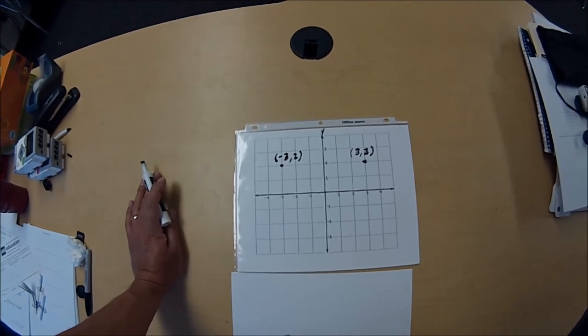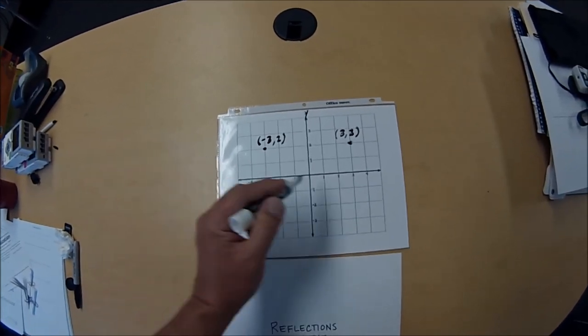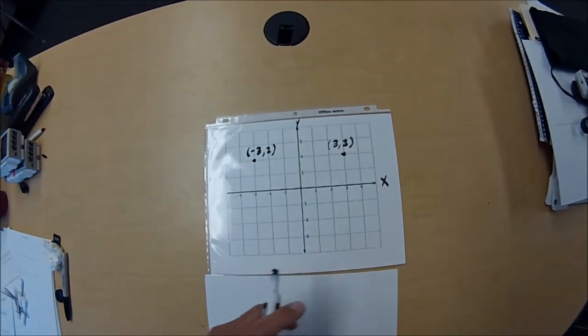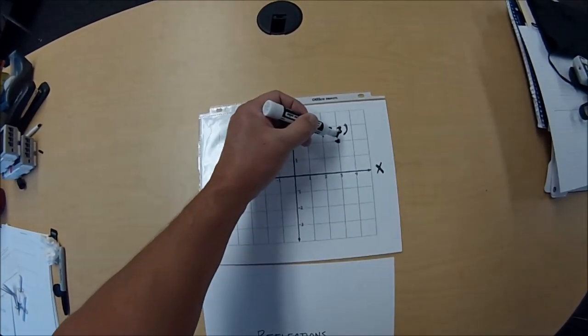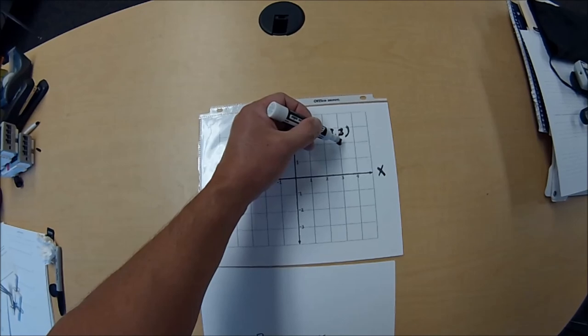Now if you're going to reflect over the x-axis, same thing—you're just going to change the net. So if this is the x-axis and we're going to reflect (3,2) over the x-axis...